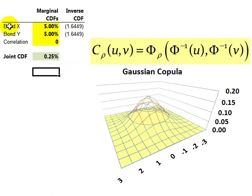So what do we mean by that? Well, here's an example. Let's take two bonds. The first bond, let's say, has a probability of default of 5%. And the second bond also has a probability of default of 5%.